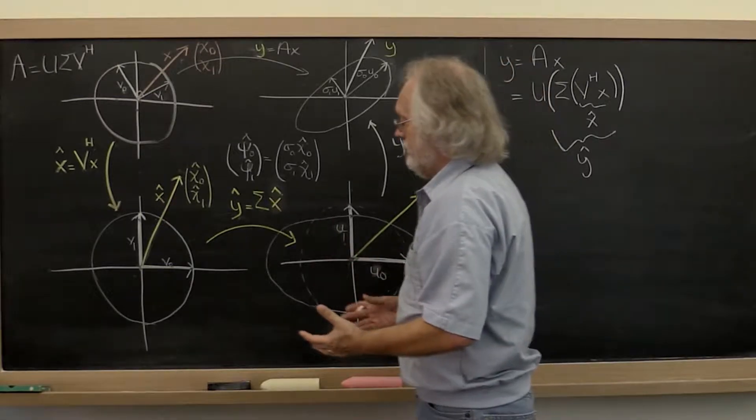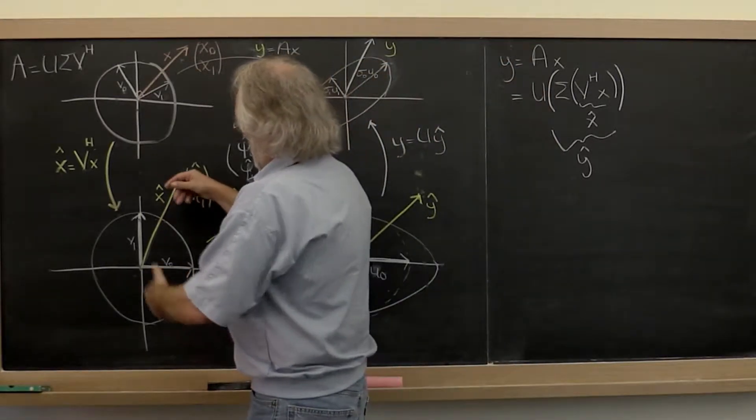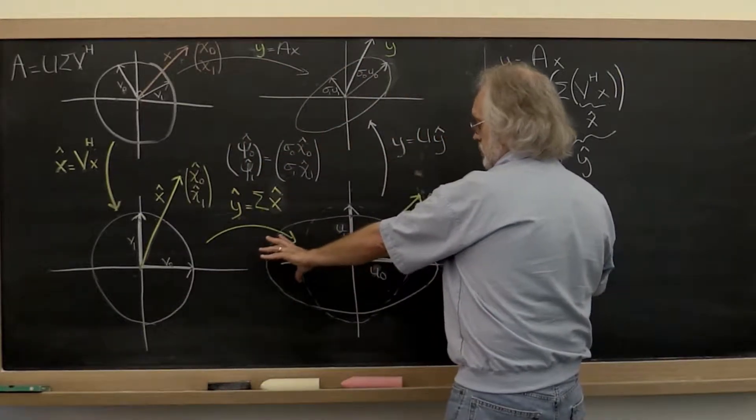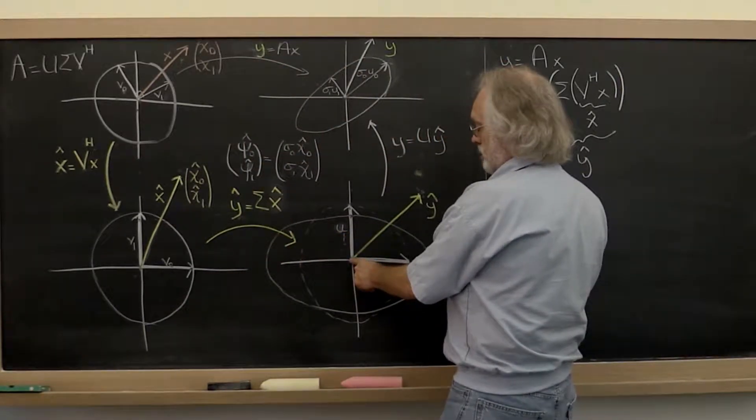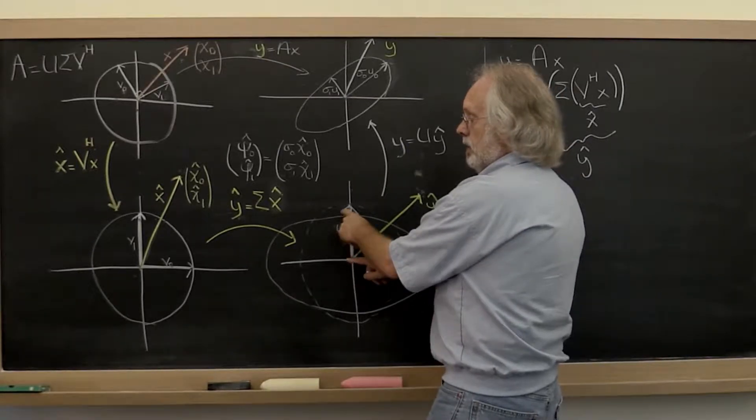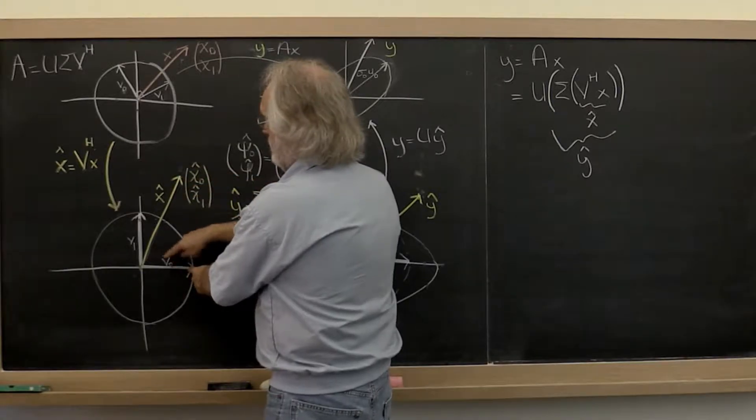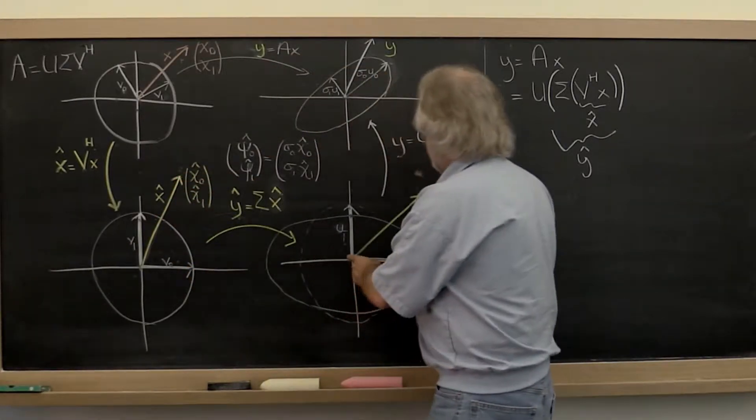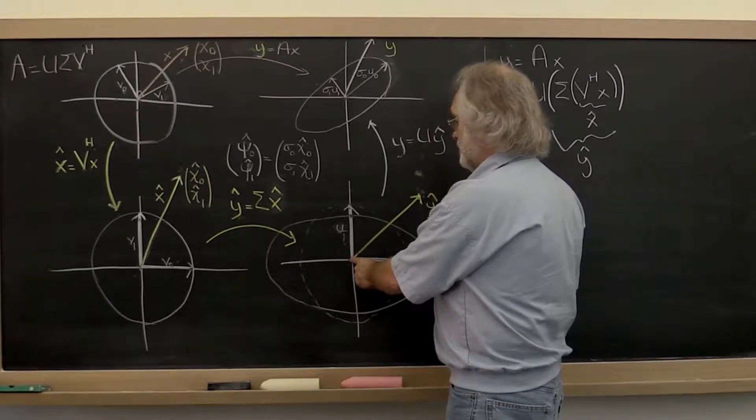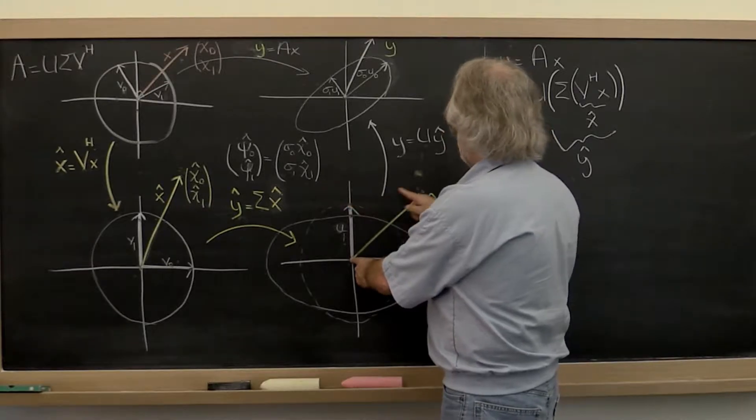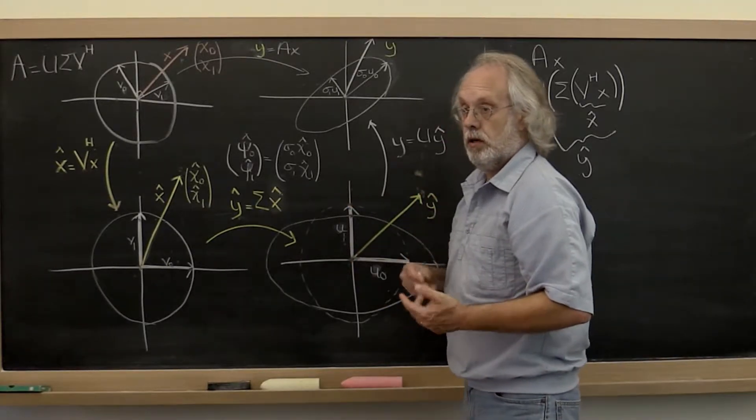Or you can say the unit ball here is transformed into this stretched unit ball here, where this here represents sigma zero and this sigma one. And then whatever linear combination of v zero and v one you take here in order to get x hat is the linear combination of sigma zero times u zero and sigma one times u one that you have to take in order to create y hat.